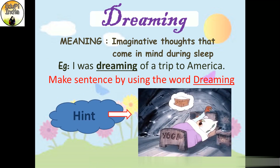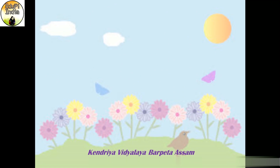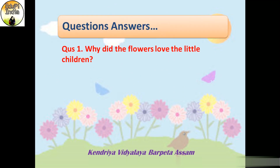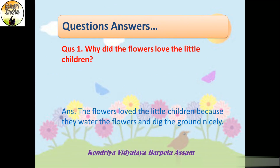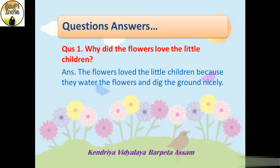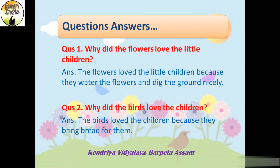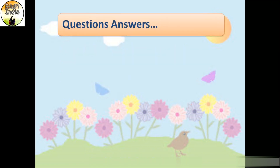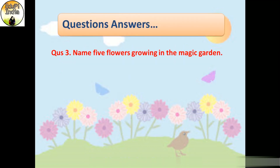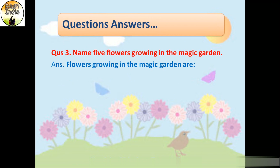Now let's discuss the question answers. The first question is: why did the flowers love the little children? The flowers loved the little children because they water the flowers and dig the ground nicely. Question number two: why did the birds love the children? The birds loved the children because they bring bread for them. Question three: name five flowers growing in the magic garden. Flowers growing in the magic garden are: